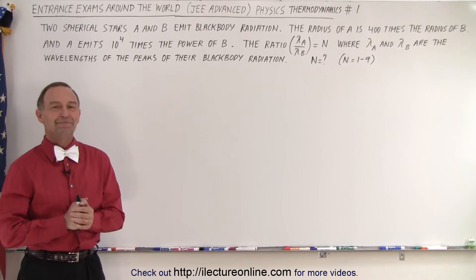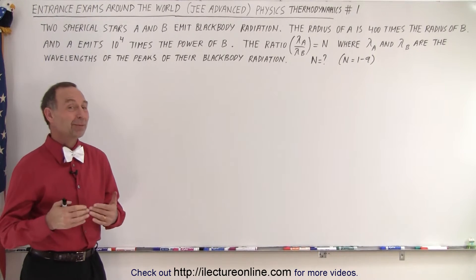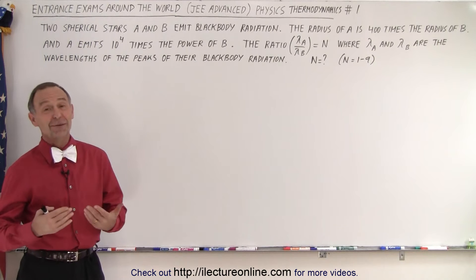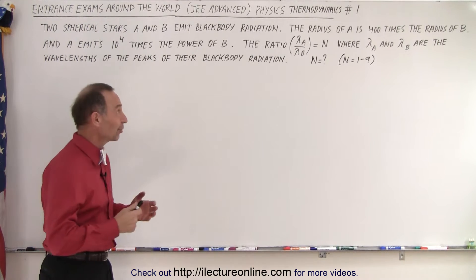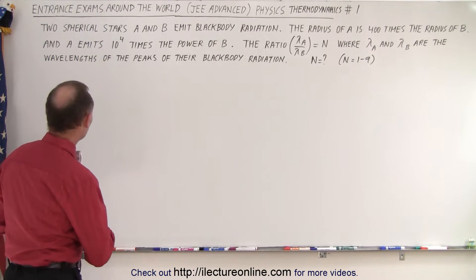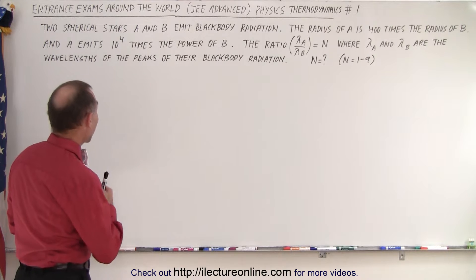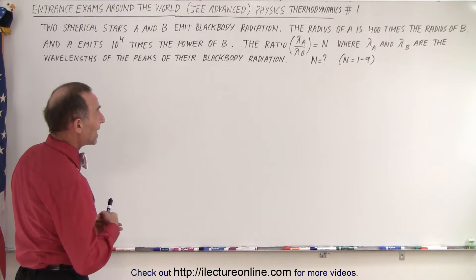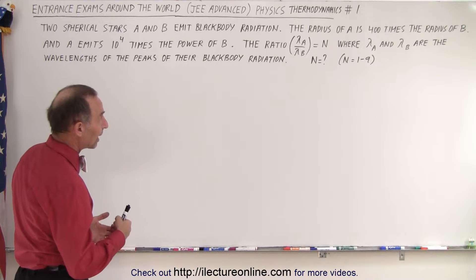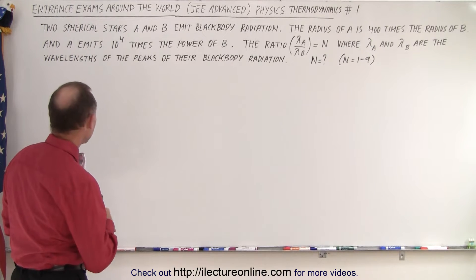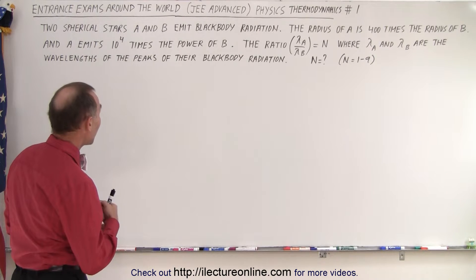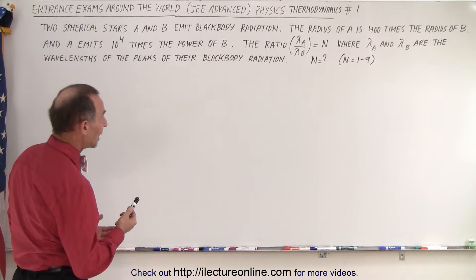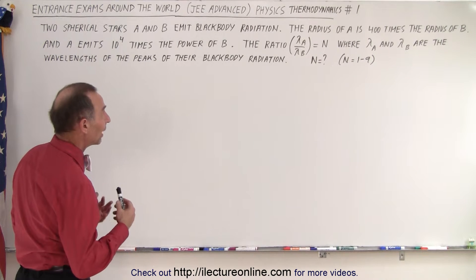Welcome to ElectroOnline. Here's a problem dealing with astronomy — two stars. Two spherical stars, A and B, emit blackbody radiation. The radius of A is 400 times the radius of B, and A emits 10 to the 4th times the power of B.